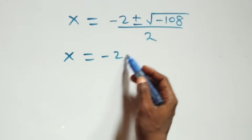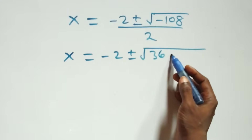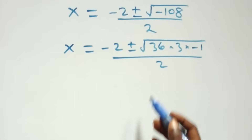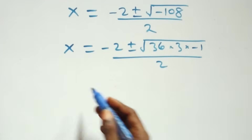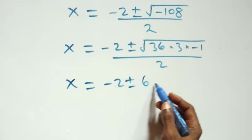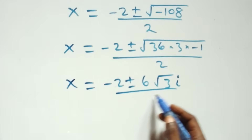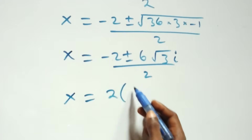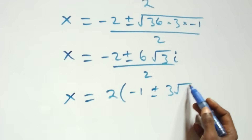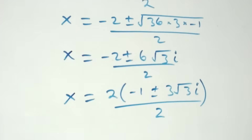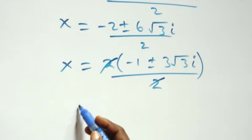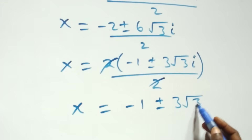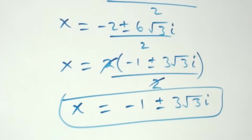This becomes x equals to minus 2 plus or minus square root of 36 times 3 times minus 1, all over 2. Root 36 we take out as 6, so x equals to minus 2 plus or minus 6 root 3i, over 2. Here 2 is common, so we factor it out: x equals to 2 into brackets, minus 1 plus or minus 3 root 3i, over 2. The 2s cancel, giving x equals to minus 1 plus or minus 3 root 3i. So we also have two complex solutions.